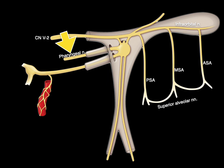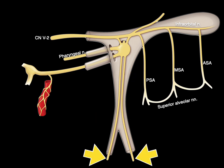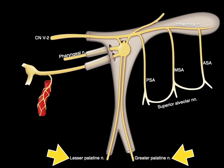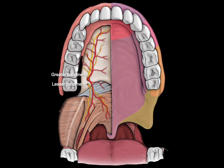Next, we have the pharyngeal nerve, which provides general sensation from V2 to part of the nasopharynx. Coming off of V2, we have nerves that descend through the pterygopalatine fossa and exit through the greater and lesser palatine foramina. Those are the greater and lesser palatine nerves, which provide general sensation — pain, temperature, and touch — to the hard palate and soft palate. The nasopalatine nerve covers more of the anterior part, while the palatine nerves cover sensation to the hard and soft palate and part of the palatine surface of the gums.